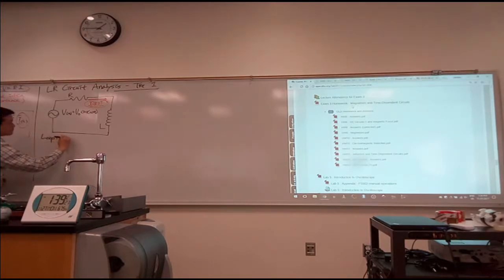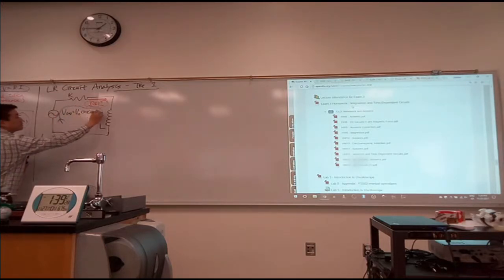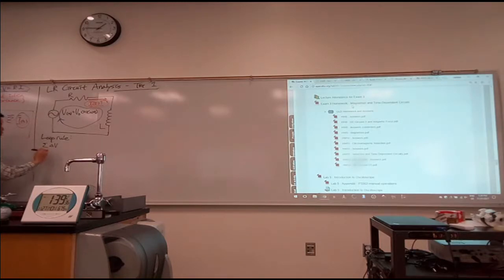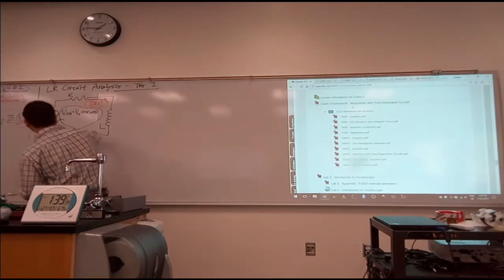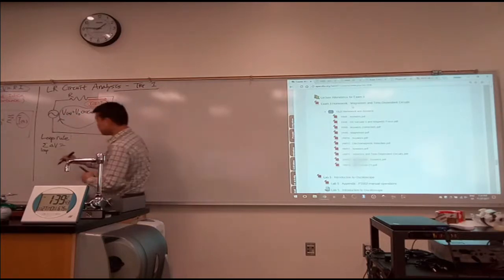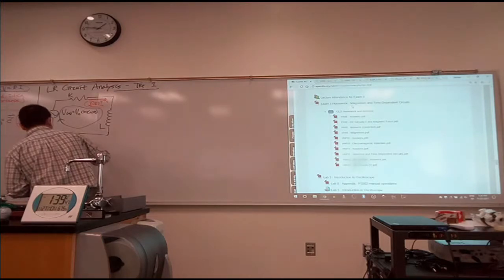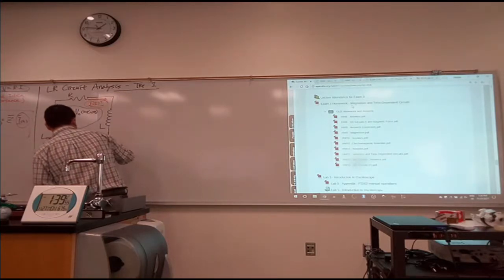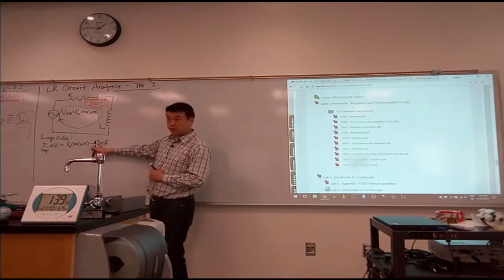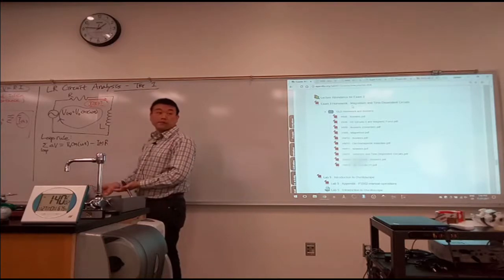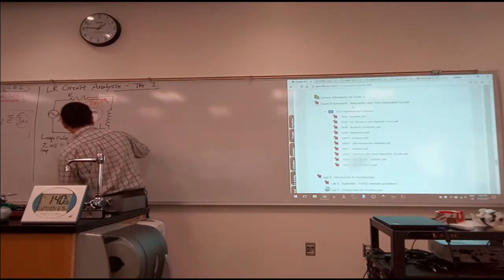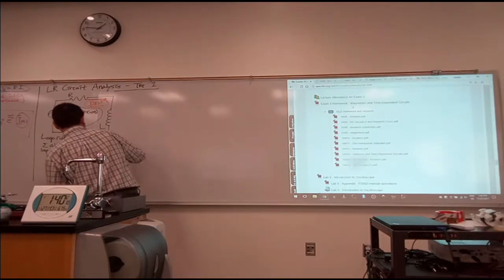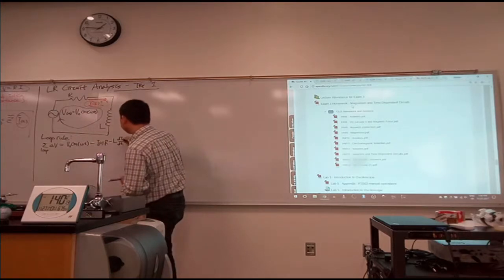Kirchhoff's loop rule says that when you go around in a loop collecting all the changes of voltage, the voltage changes should add up to zero. As I go across the power supply, I collect this voltage rise V naught cosine of omega t. As I go across the resistor, I get a voltage drop of minus I·R — I'm writing this to remind me that current is a function of time. And as I go across the inductor, I get a voltage drop of minus L·dI/dt. All of this adds up to zero.